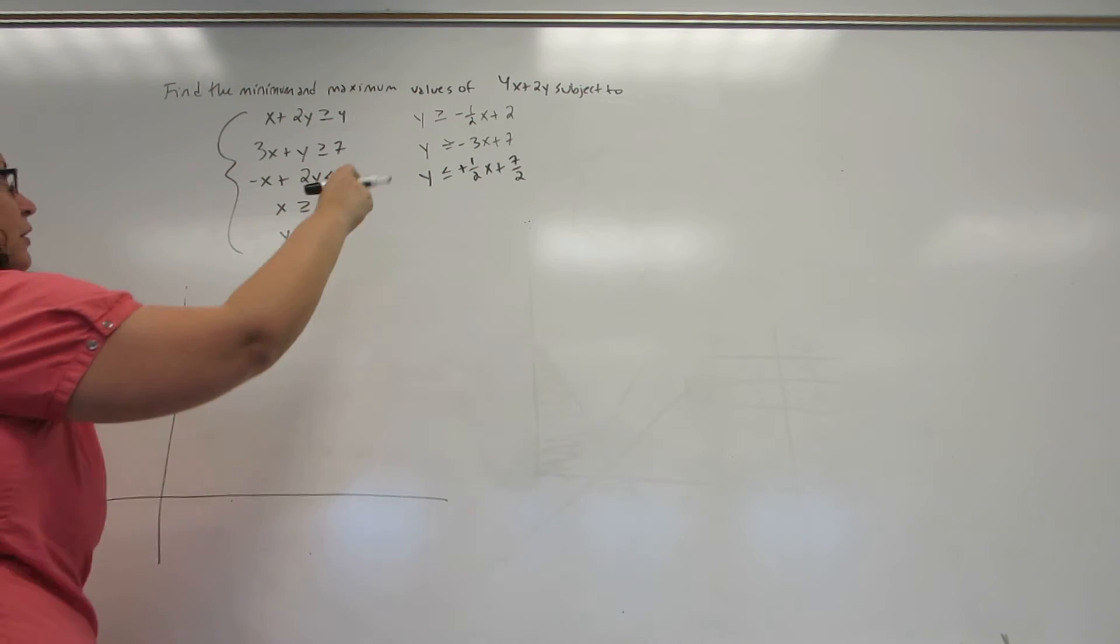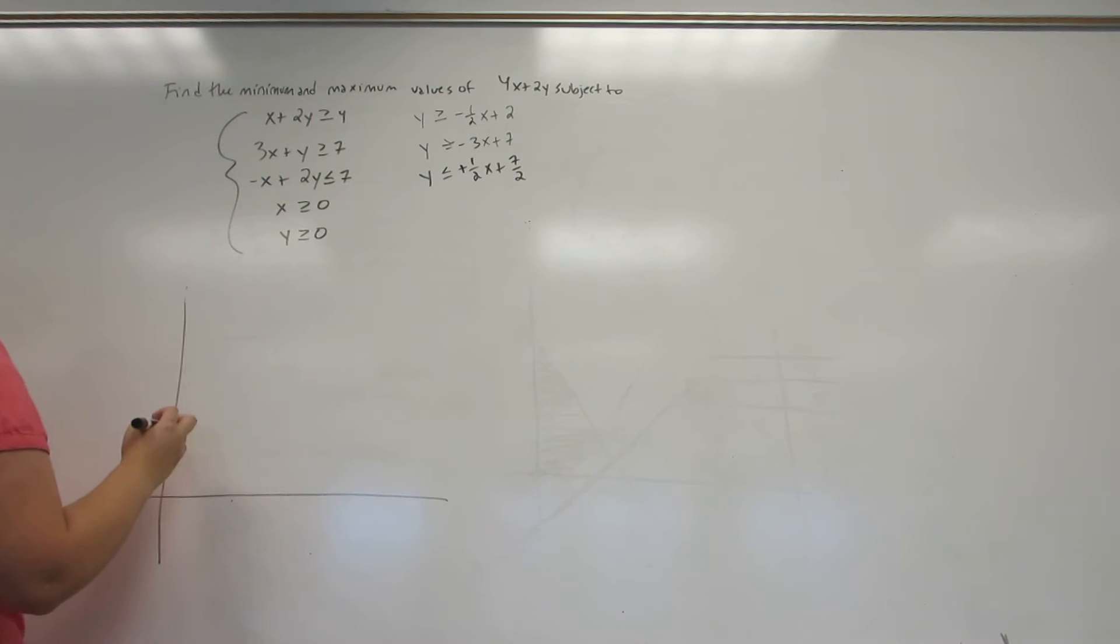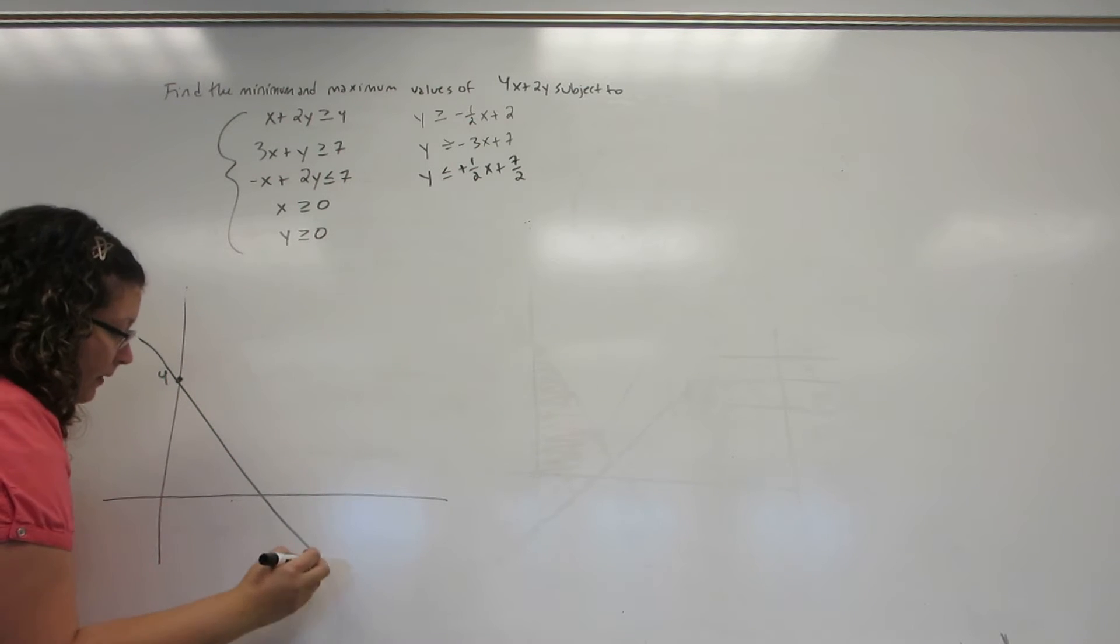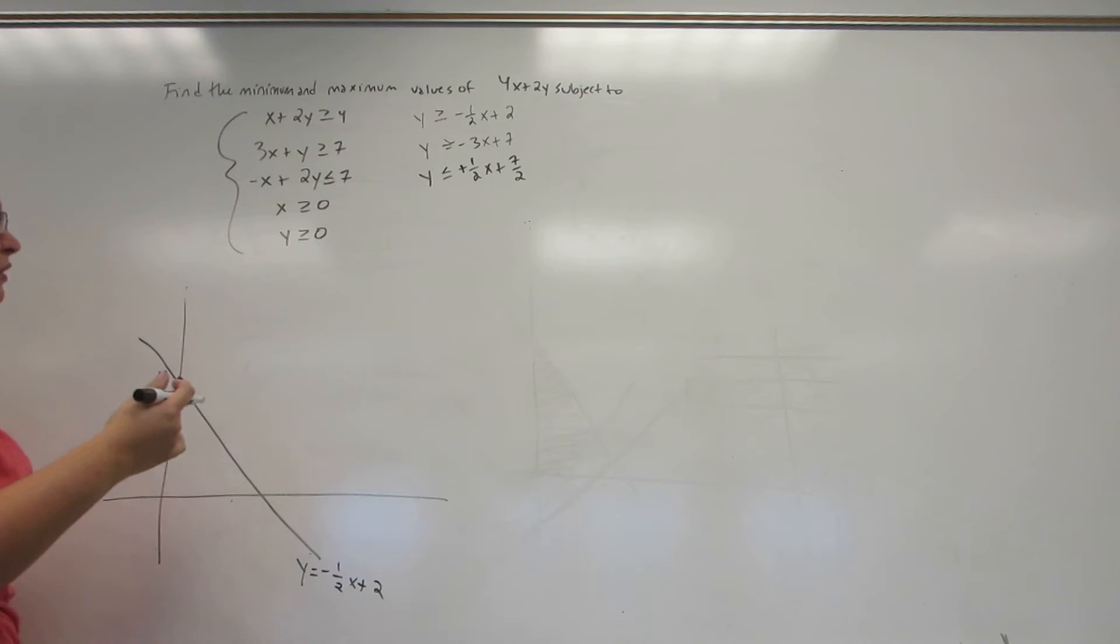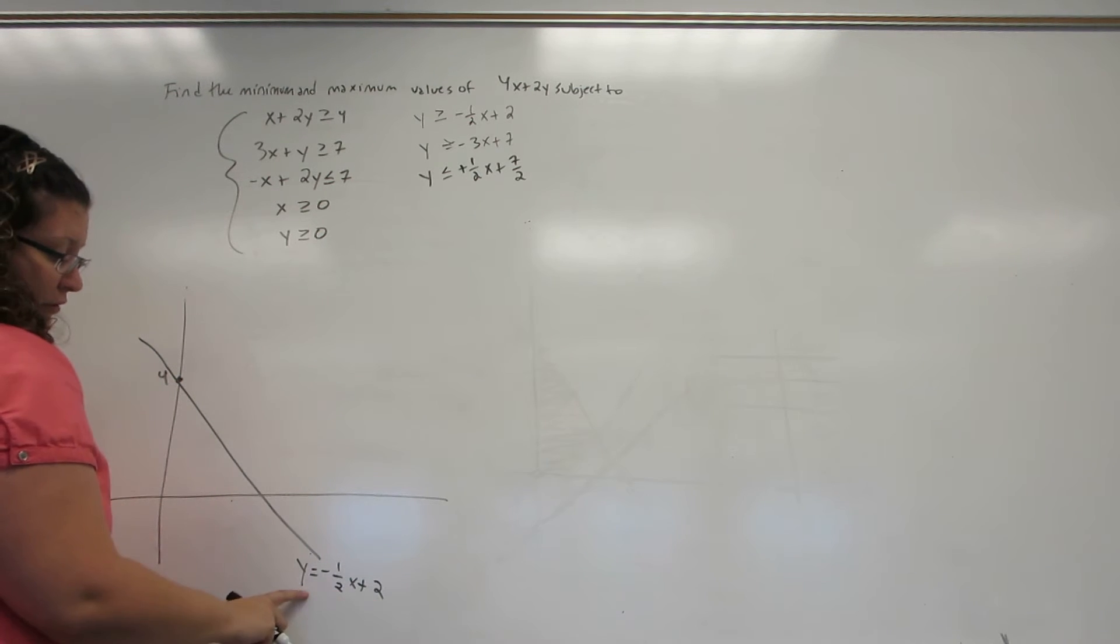First of all, minus a half X plus 2 has a Y-intercept of 4 and slopes downward. It is going to help me in the long run if I know the X-intercept. The X-intercept of this graph is what happens when Y equals 0, and that's at 4.